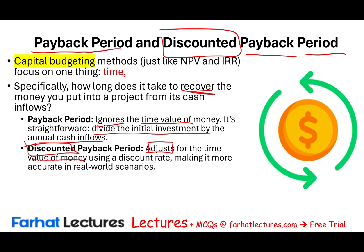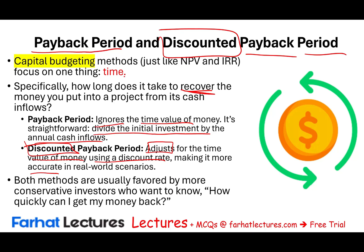The discounted payback period adjusts for the time value of money — that's why it's called discounted. Discounted means finding the present value using a discount rate, making it more accurate and taking into account time in real-world scenarios. Both methods are usually favored by more conservative investors and owners who want to know how quickly they get their money back. In this session we'll cover those two methods: their formulas, how they're computed, their strengths, and their weaknesses.